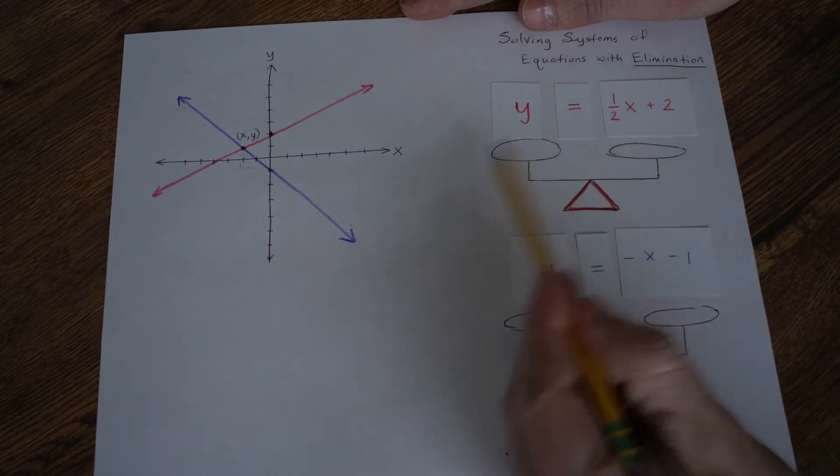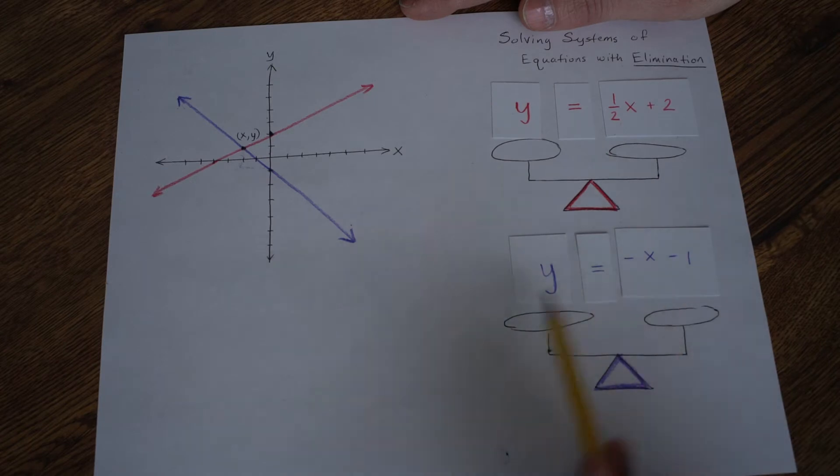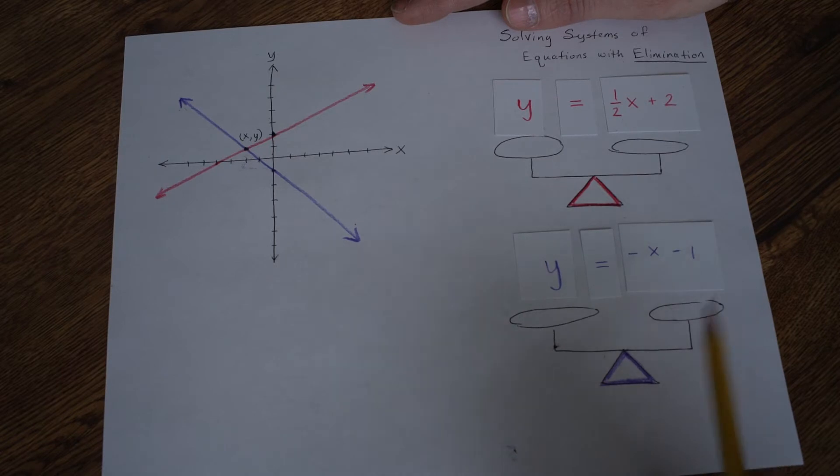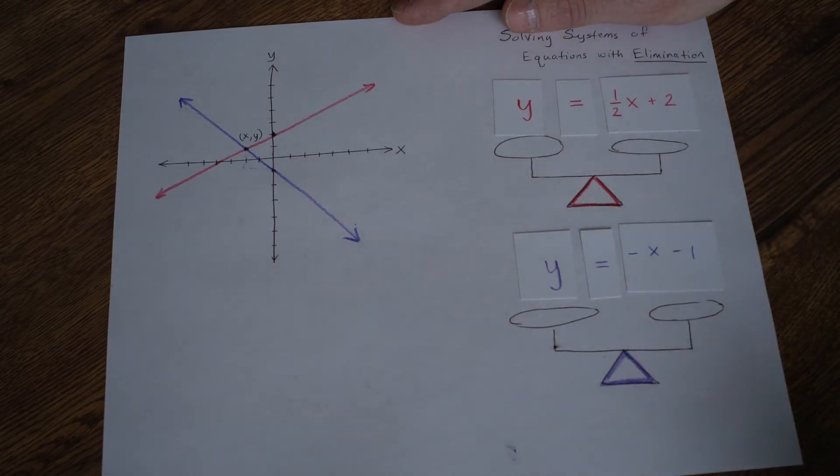Let me ask you this question. You know that this is a balanced scale, so the two sides are equal. You know that this is a balanced scale, and the two sides are equal.